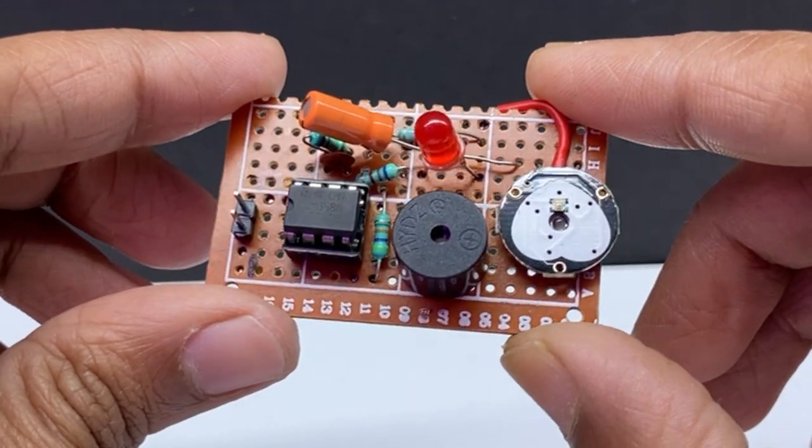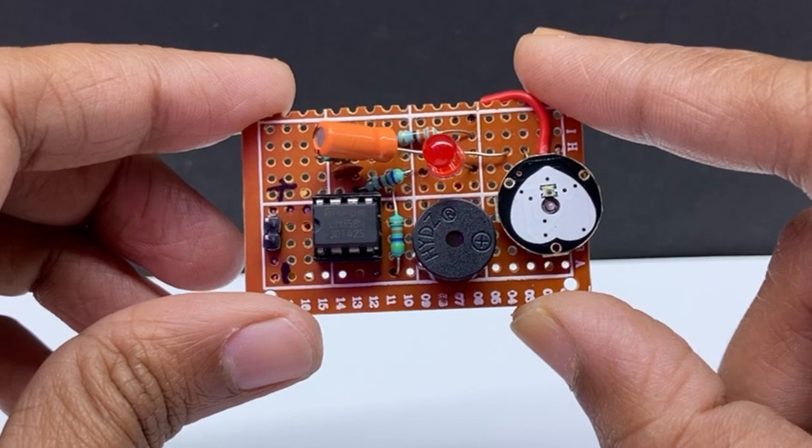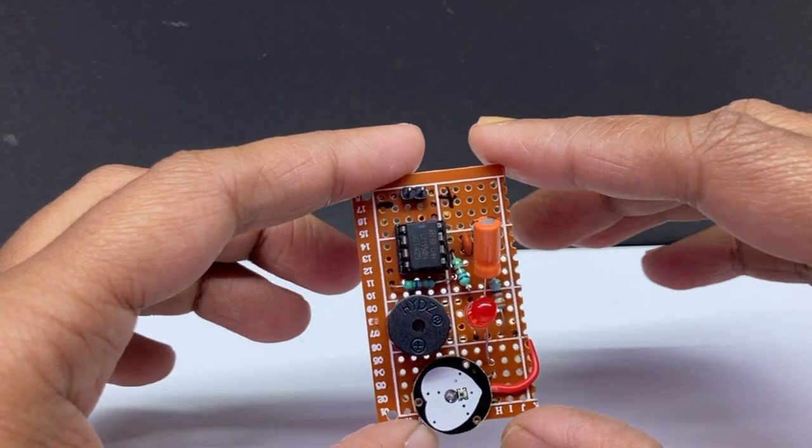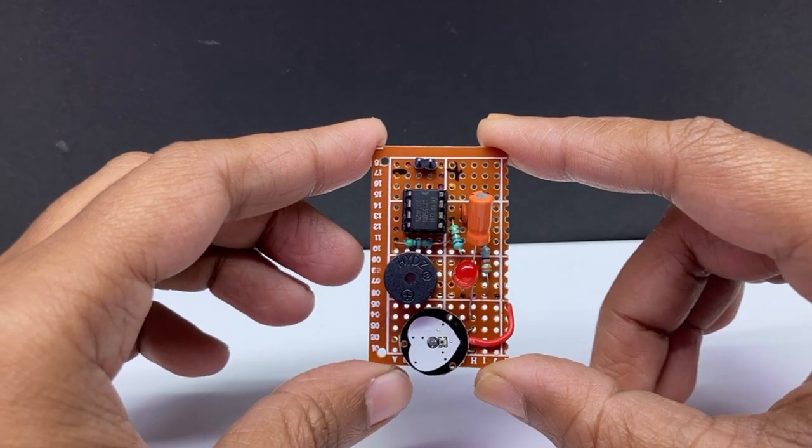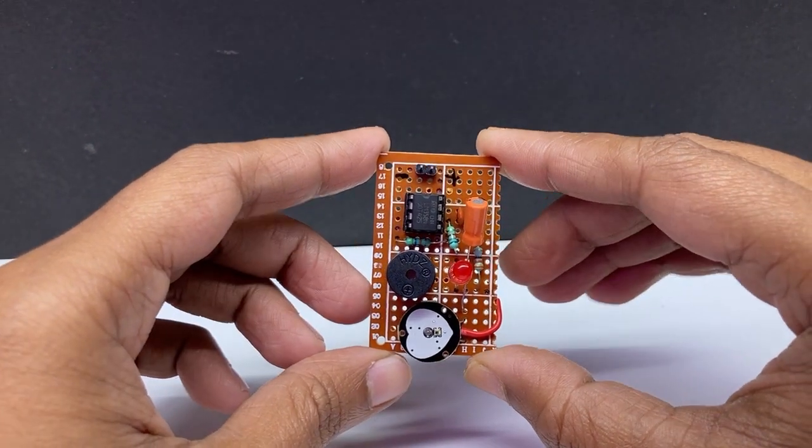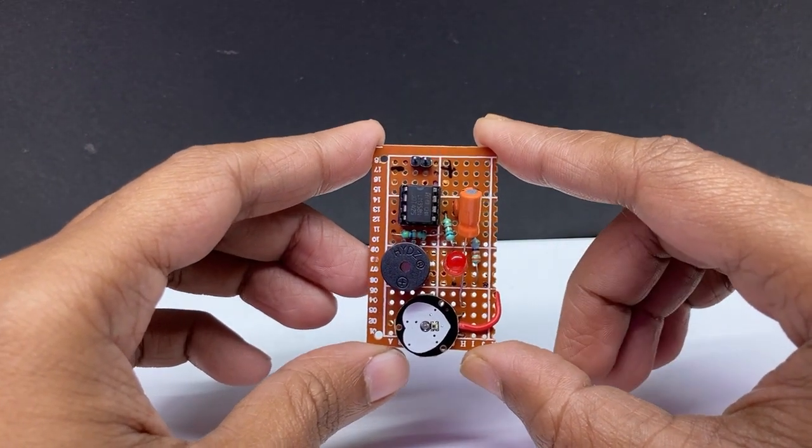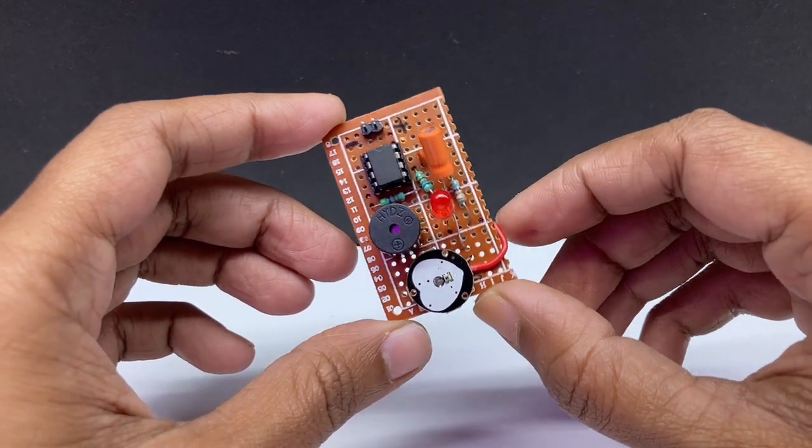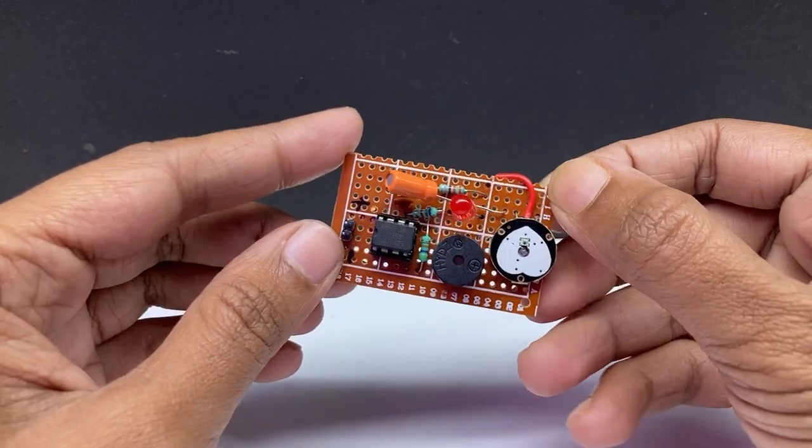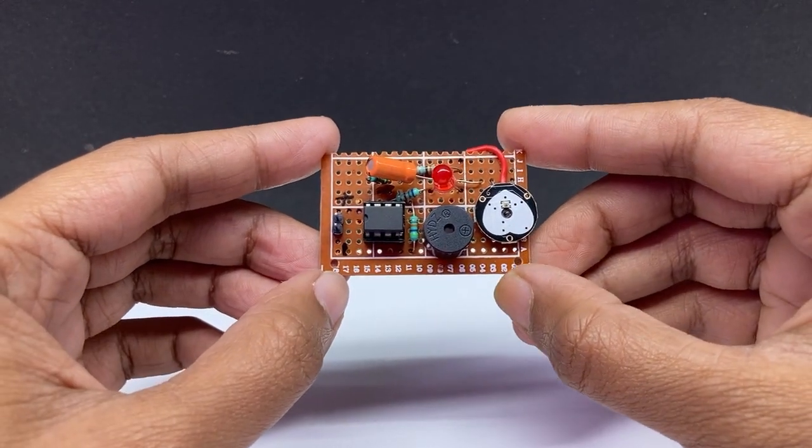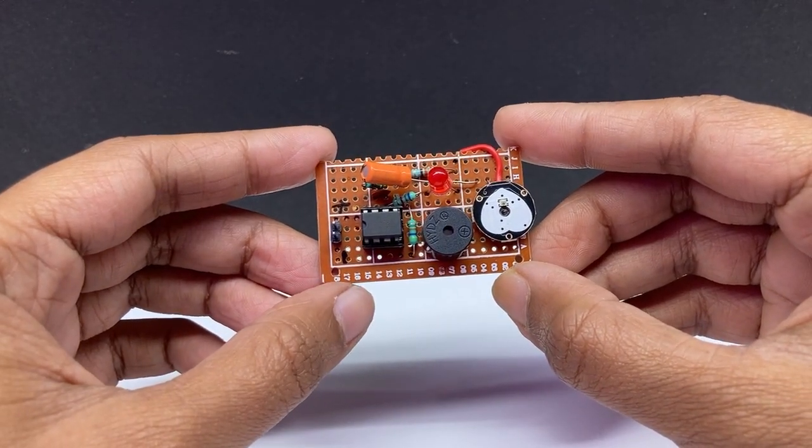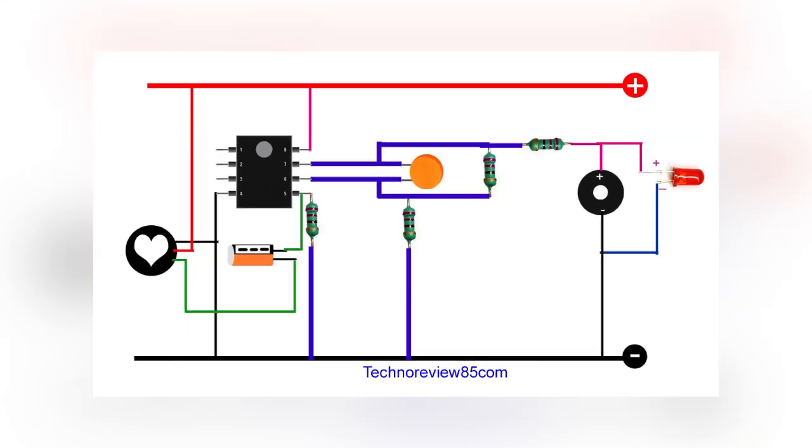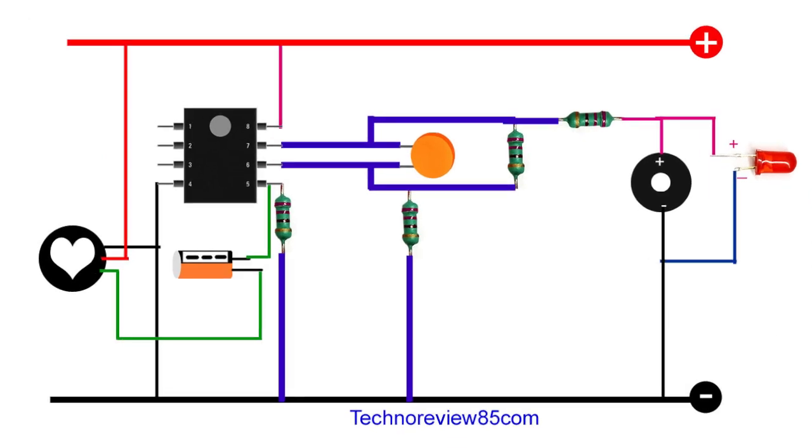Dear friends, in this video I shall show you a heartbeat sensor circuit. It is a pulse monitor with sound and LED indicator. It is an easy electronic circuit using operational amplifier IC358. To make this circuit, I did not use an Arduino or any other microcontroller, so no programming needed. The circuit diagram is included in this video and I will show you all component connections step by step.